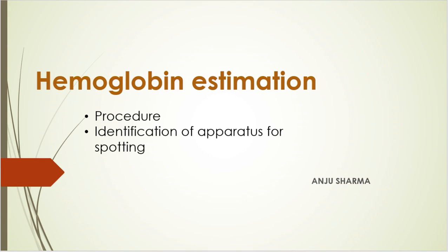Today's video is a practical video in which we'll see hemoglobin estimation. Within hemoglobin estimation, you should know the principle and the procedure, but along with that, you should be very confident in identification of apparatus parts, because you can get spots of those apparatus. For example, a hemoglobinometer tube can be given or a pipette can be given with other pipettes in spotting, and you have to identify the hemoglobinometer pipette. In this video, we'll see everything.